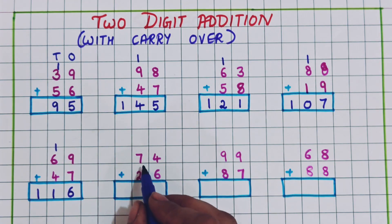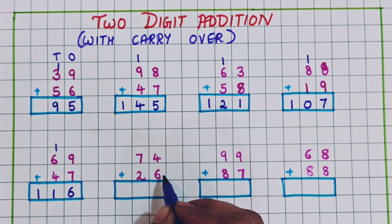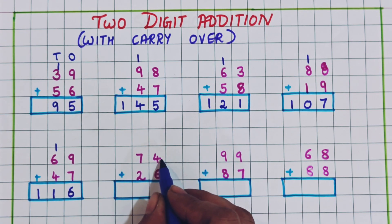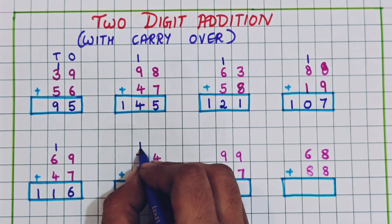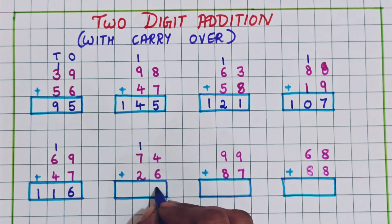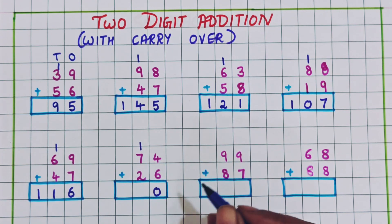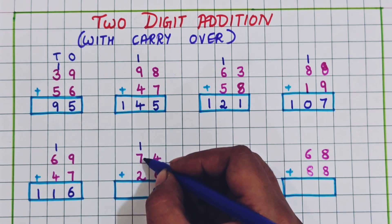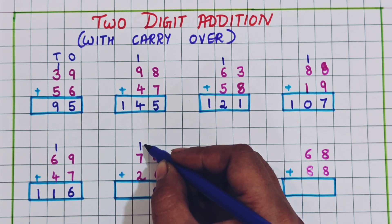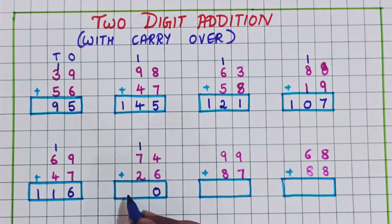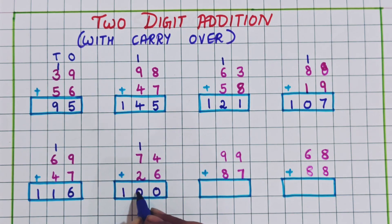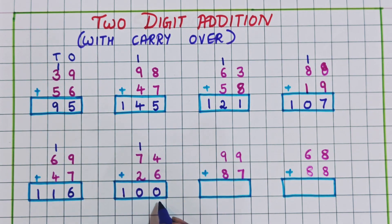Now 74 plus 26. Now 6 plus 4 is 10, so I will write 1 here and 0 here. Now 7 plus 1 is 8, and 8 plus 2 is 10. So the answer is 100.